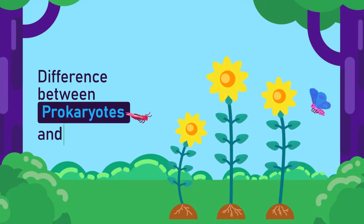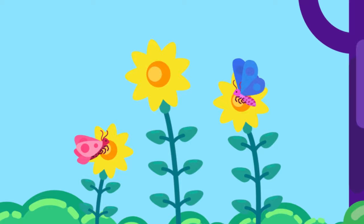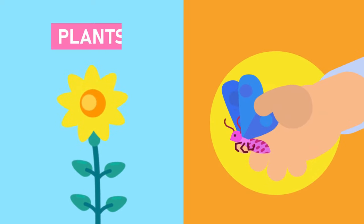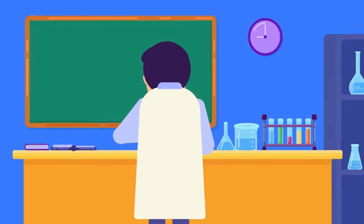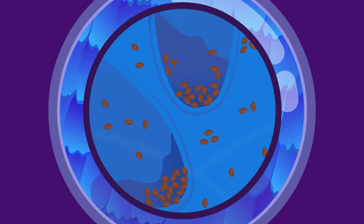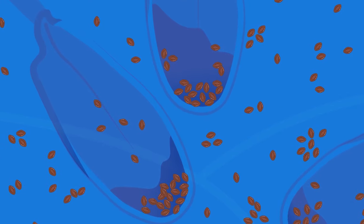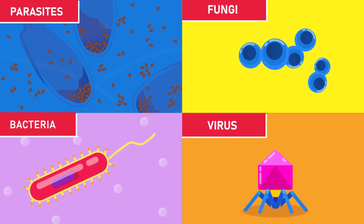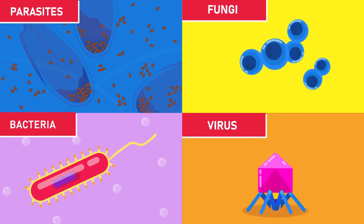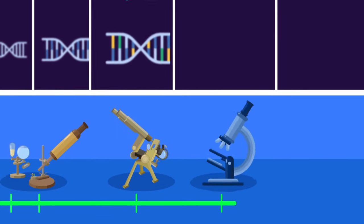Difference between prokaryotes and eukaryotes. Previously, all living organisms were classified into plant and animal kingdom. But it has long been proven that living organisms are far more complex. A common example of it is the existence of microorganisms like parasites, fungi, bacteria, and even viruses that are very different from plants and animals.